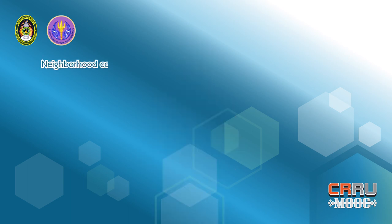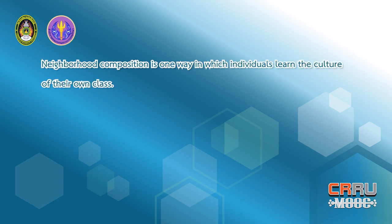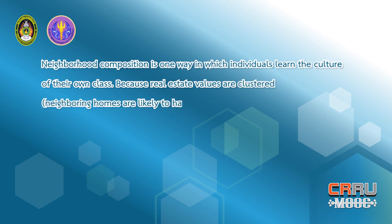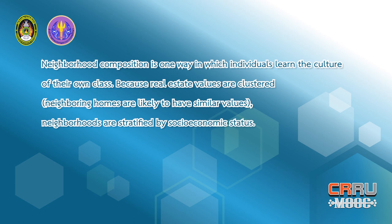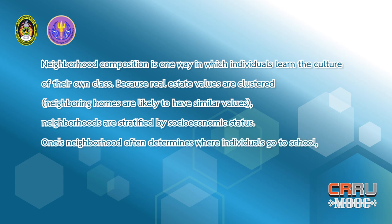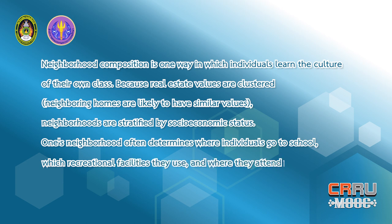Fourth: class culture. A system of beliefs, values, and behaviors that is particular to a socioeconomic group. For example, neighborhood composition is one way in which individuals learn the culture of their own class. Because real estate values are clustered, neighboring homes are likely to have similar values. Neighborhoods are stratified by socioeconomic status, and one's neighborhood often determines where individuals go to school, which recreational facilities they use, and where they attain religious services.